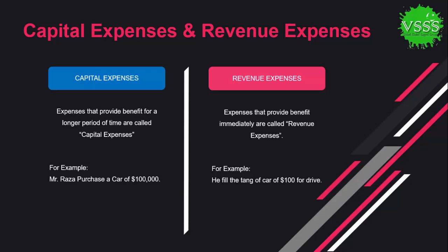On the other hand, revenue expenses are those that provide immediate benefit. For example, when Mr. Raza fills petrol in his car, that is treated as revenue expenditure because the benefit from the petrol is immediate and lasts only a short period of time. So purchasing the car is capital expenditure, while filling the petrol is revenue expenditure — that is the difference between the two.